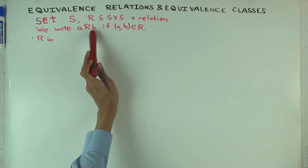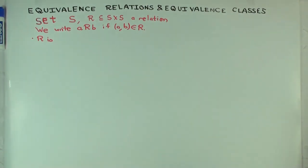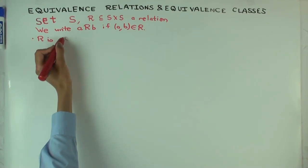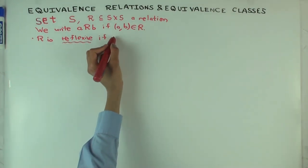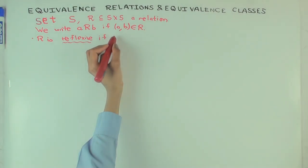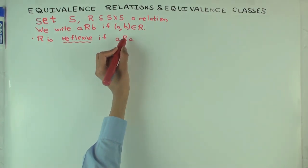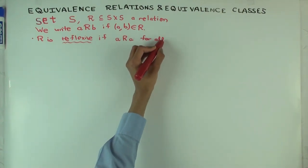We'll denote A R B if the pair (A, B) is in R. Now, R is reflexive if A R A for every A in S. So given any relation, I can ask: is the relation reflexive or not? I would check that this condition is true for all A.